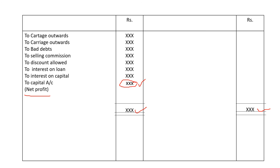In the same way, to calculate net loss: if the debit side total is more, we take that total to the credit side as well. Then from the total, we deduct all the credit incomes. Whatever resultant we get, we write it as 'By capital account — net loss transferred.' This net loss is transferred to the balance sheet, and from capital we have to deduct the net loss.